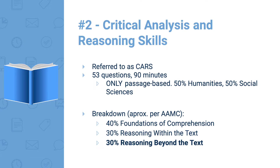The CARS section has 53 questions and 90 minutes, and these are only passage-based. Generally the split is 50% humanities and 50% social science in terms of the passages you're given. You'll have a certain number of passages with usually five to seven questions to answer based on each passage.